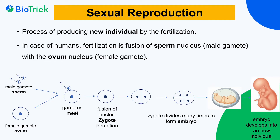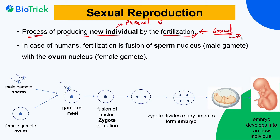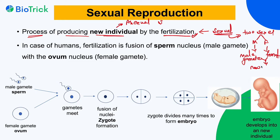Before starting, let's understand the meaning of reproduction. Reproduction is the process of producing new individuals. New individuals can be produced by asexual reproduction, but if the reproduction involves the process of fertilization then it is sexual reproduction. Sexual reproduction is so named because it involves two sexes — male and female — and the involvement of two sexes is essential, otherwise it becomes asexual reproduction.